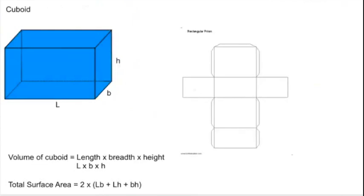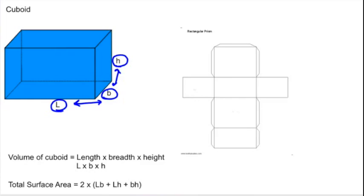Now, what you'll notice with cuboids is that the net looks a little different. Here we have the length, the breadth, and the height. And when you multiply those values together in different combinations, you get different areas. Looking at the net, you'll notice: length times breadth, breadth times height, length times height, breadth times height, length times height, and length times breadth.